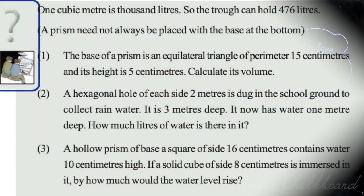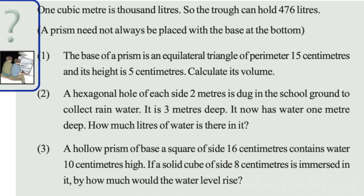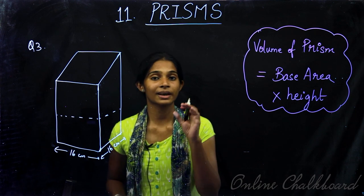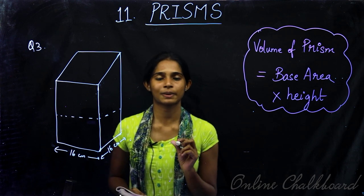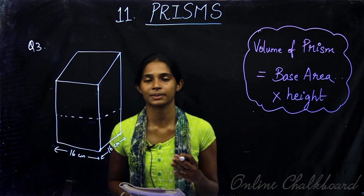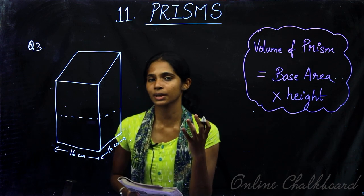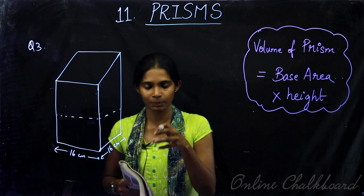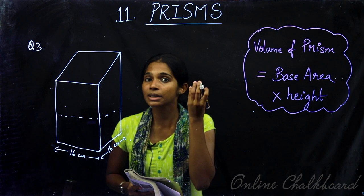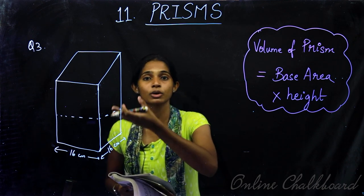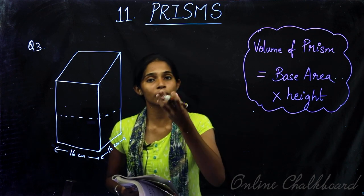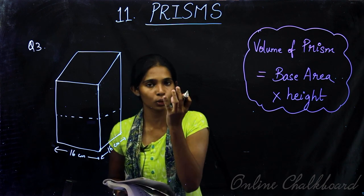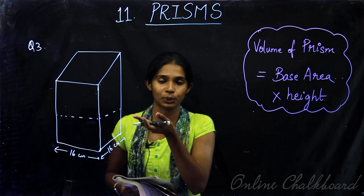Question number 3. A hollow prism of base a square of side 16 centimeters contains water 10 centimeters high. If a solid cube of side 8 centimeters is immersed in it, by how much would the water level rise? This is an interesting question related to Archimedes' Principle: when an object is immersed in liquid, the volume of the object raises the exact amount of liquid.